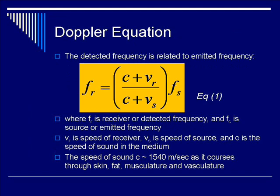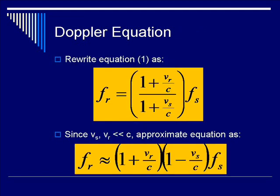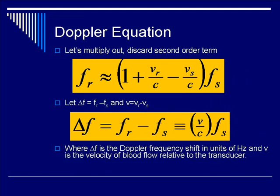Let's construct the Doppler equation from scratch. The characteristic wave equation incorporates Doppler shift, where the frequency of the receiver, F_R, equals a fraction multiplied by the source frequency. V_R is the receiver speed, V_S is the source speed, and C is the speed of sound within the medium — 1540 meters per second for soft tissue. After some manipulation using calculus, the Doppler shift frequency F_D is approximated as: F_D = F_S × (V / C), where V is the velocity and F_S is the source frequency.